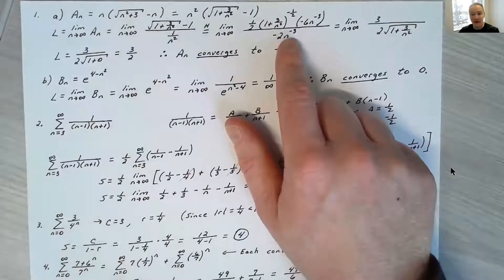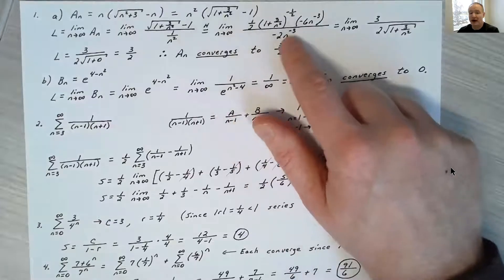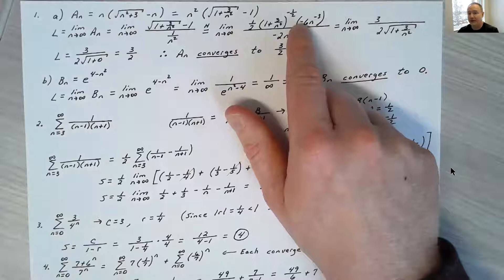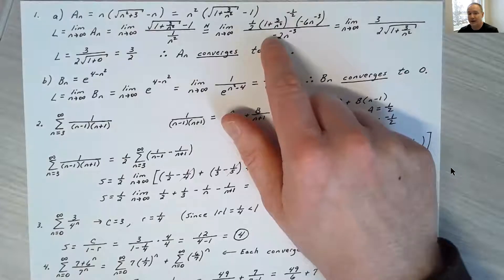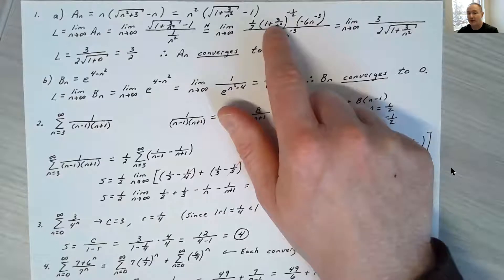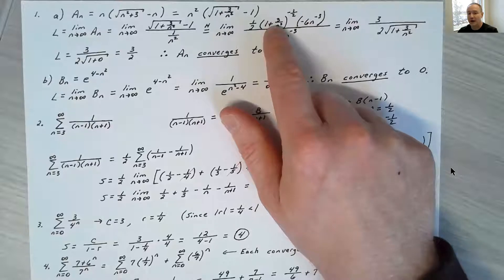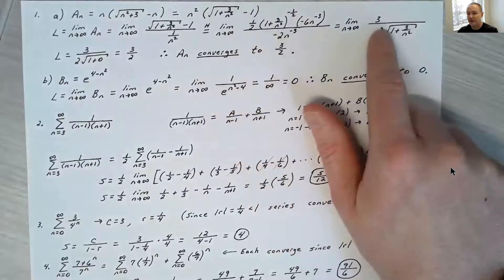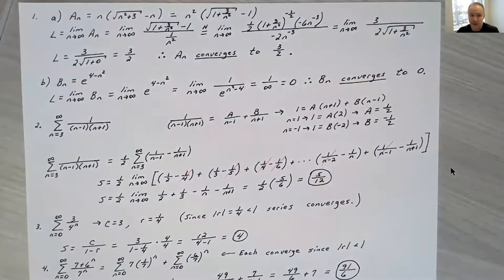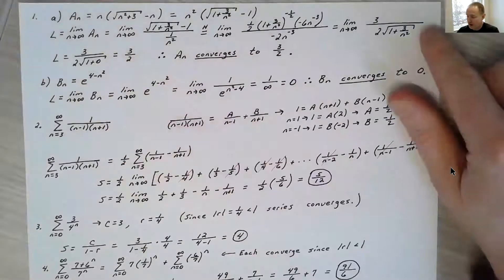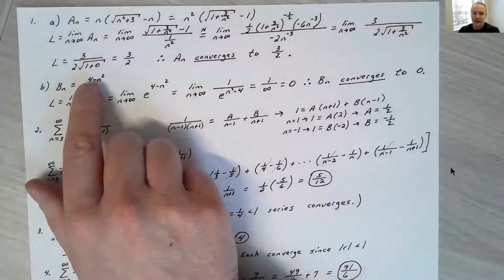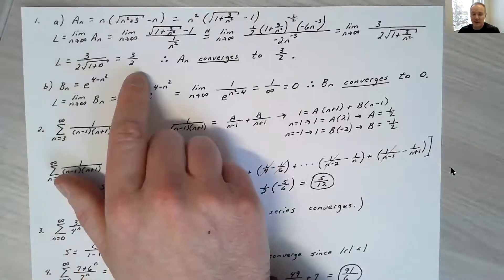A lot cancels here. The factor of n to the negative 3 in numerator and denominator cancels. One-half times negative 6 gives negative 3, and the denominator is negative 2, so the negatives cancel, giving 3. The group to the one-half power in the denominator becomes positive — I wrote it as a square root — with a factor of 2 left. So I ended up with the limit as n approaches infinity of 3 over 2 times the square root of 1 plus 3 over n squared. As n goes to infinity that term goes to 0, giving a final answer of 3 over 2.